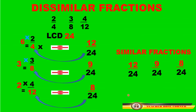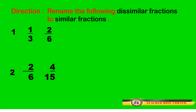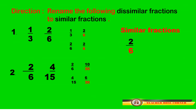I hope you now know how to rename dissimilar fractions to similar fractions. Let us have a short quiz. Rename the following dissimilar fractions to similar fractions. For 1 third and 2 sixth, the similar fractions are 2 sixth and 2 sixth. For the next one, 2 sixth and 4 sixth. For 2 sixth and 4 fifth, the similar fractions are 10 thirtieths and 6 thirtieths. Have you got it right?